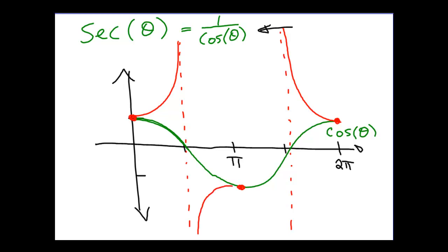So we end up with a graph that looks something like this — and this is the graph of the secant of theta. This graph in red is the graph of secant of theta. A couple of interesting things to note: secant of theta has no zeros and no roots. Secant of theta doesn't have maximums — it kind of has minimums. The upper parts only go down to 1, and the highest the negative part goes is up to −1.